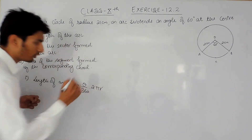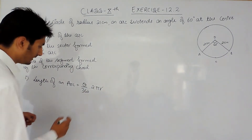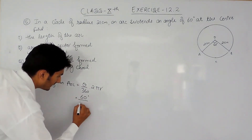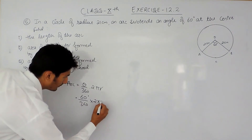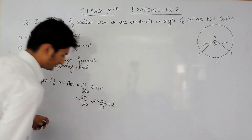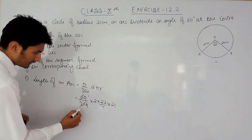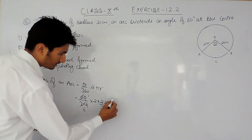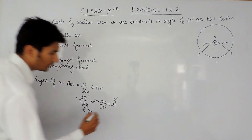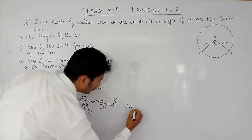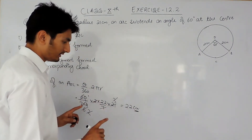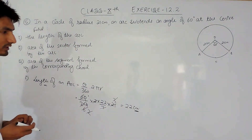The length of an arc equals theta divided by 360, multiplied by the circumference formula 2πr. Substituting the values: theta is 60 degrees, and radius is 21. The value of pi is 22/7. After cancellation — 60 cancels 6 times with 360, 7 cancels with 21 giving 3, 3 cancels, and 2 cancels — the answer is 22 cm. So the length of the arc is 22 cm.